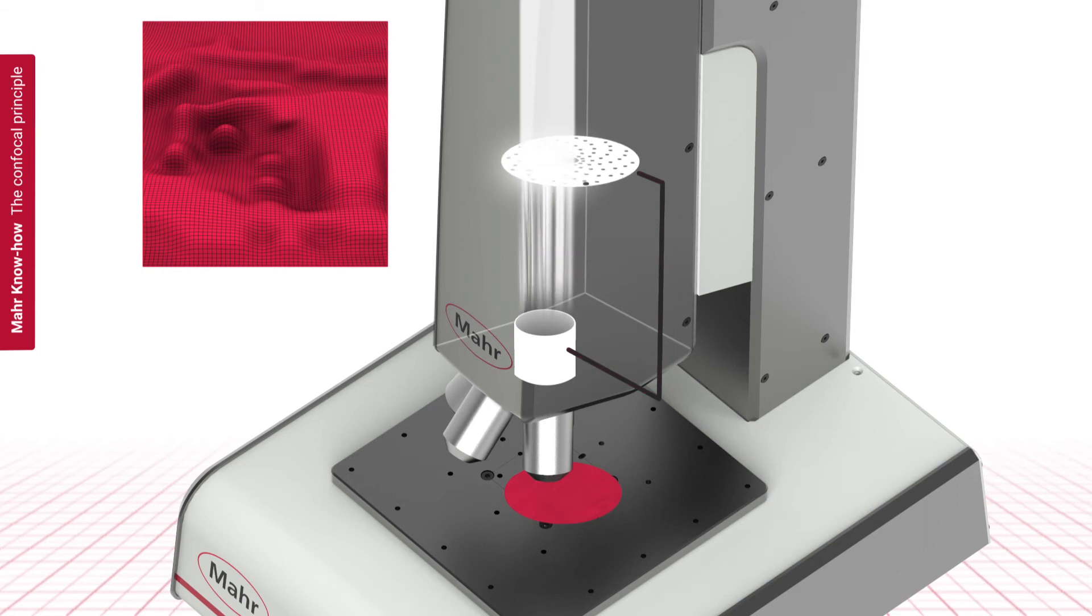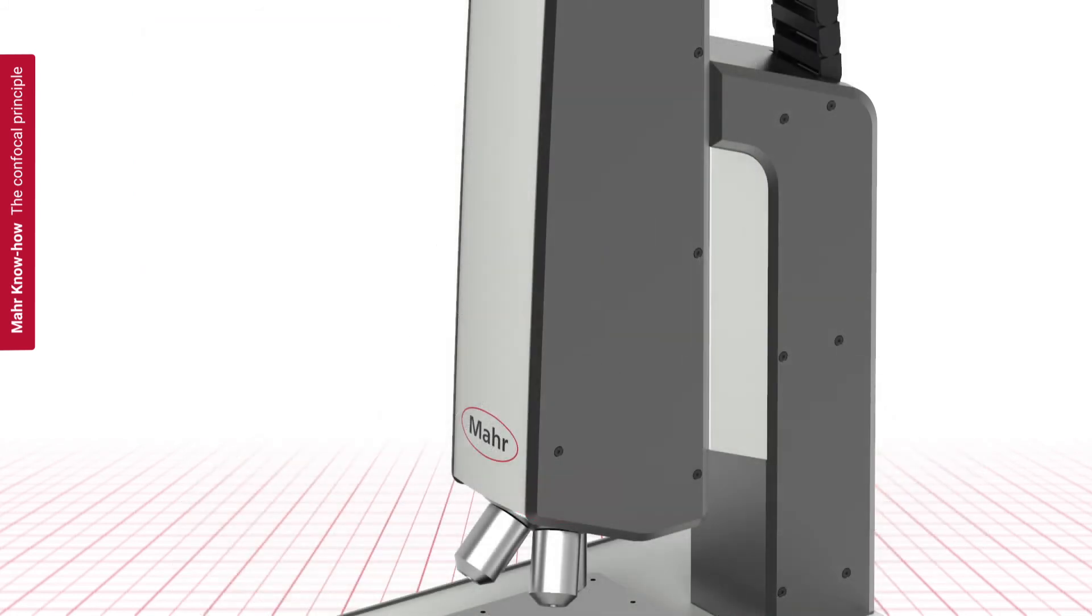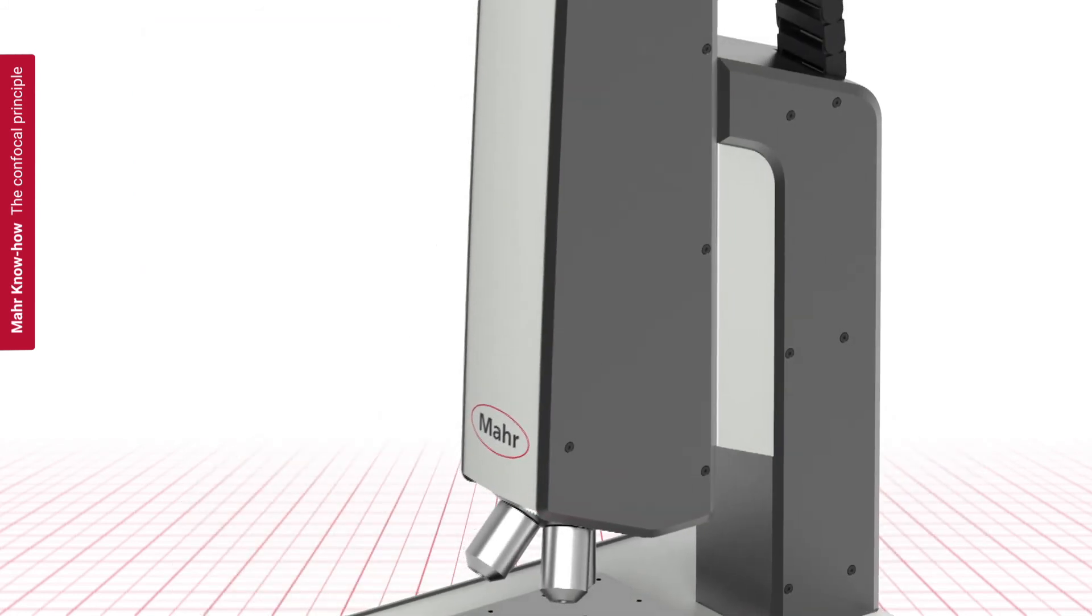Both the high measuring speed of the MarsServe CM systems and their robust masking of scattered light on optically challenging surfaces result from the use of the multi-pinhole filter.